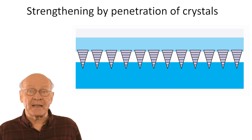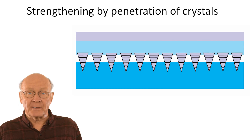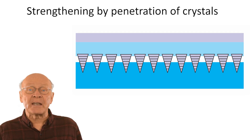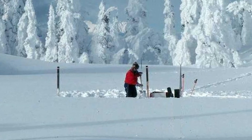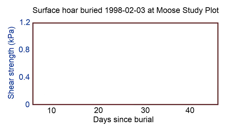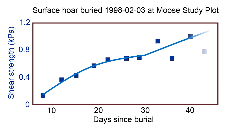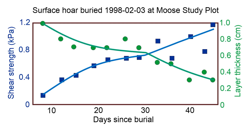Over time, increased load from snowfall pushes surface oar crystals into the layers above and below, as shown by this animation. For wedge-shaped crystals like these, the narrow bases are expected to penetrate faster than the wider tops of the crystals. Penetration into adjacent layers will add to the strength of the surface oar layer. By going back to the same study plot 12 times in the 6 weeks after a layer of surface oar was buried, ASARC researchers identified this strength increase. In the same set of observations, the thickness of the layer decreased, which supports the concept that penetration of surface oar crystals into adjacent layers is a process that increases the strength of a surface oar layer.